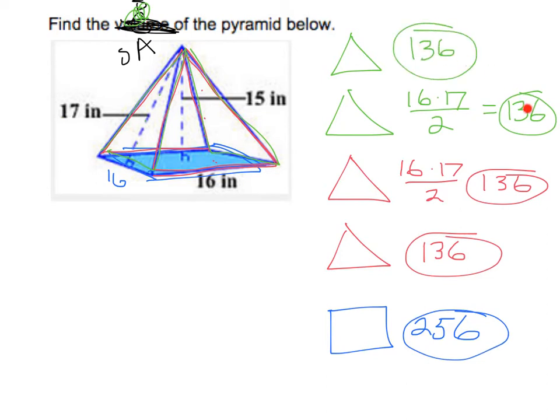Now we want to take all five of our different surface areas and we want to add those together. So if we do 136 times 4, because there's four of them, we get 544 plus the 256 will give us a total surface area of 800 inches squared.